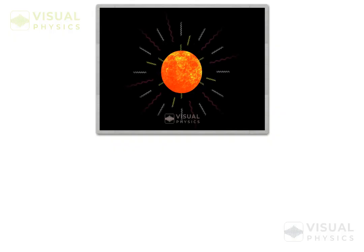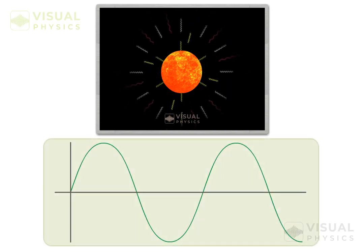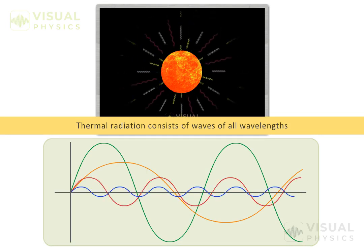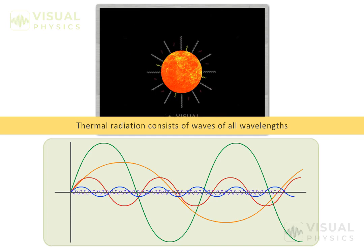We have discussed that every object above 0 Kelvin emits thermal radiations in the form of electromagnetic waves. And these radiations do not happen at a single wavelength. Instead, the radiation consists of waves of all wavelengths ranging theoretically from 0 to infinity.